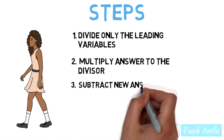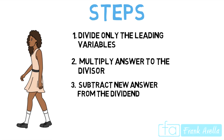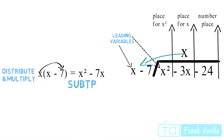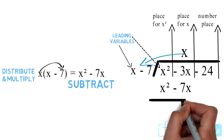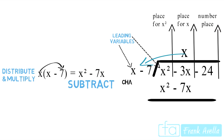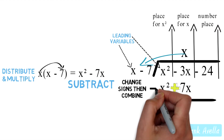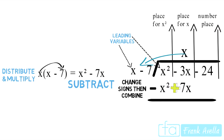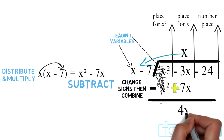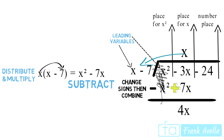Step 3: subtract the new answer from the dividend. We place x squared minus 7x under its respective placeholders and drop the equation bar. Whenever subtracting, change the sign and then combine. So negative 7x becomes positive 7x and x squared becomes negative x squared. Combining like terms: x squared terms cancel, and negative 3x plus positive 7x gives us 4x. We also have negative 24 up top, which will be dropped down.